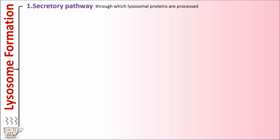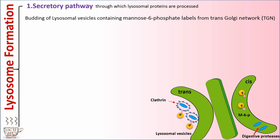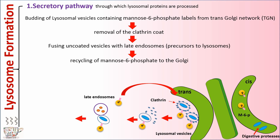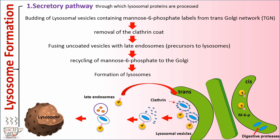There are two pathways. The first pathway is the secretory pathway, through which lysosomal proteins are processed. The first step is budding of lysosomal vesicles containing mannose-6-phosphate labels from the trans-Golgi network, or TGN. Then removal of the clathrin coat occurs. Uncoated vesicles fuse with the late endosomes that are precursors to lysosomes. The next step is recycling of mannose-6-phosphate to the Golgi. Finally, formation of lysosomes occurs.